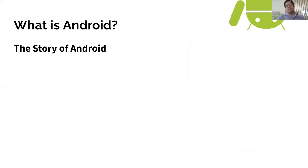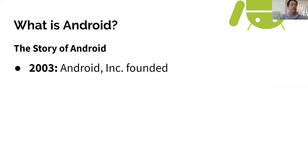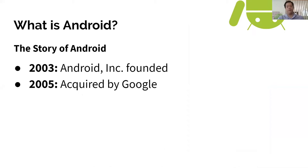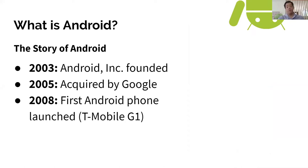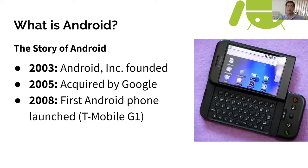Let me give you a brief history of Android. Android was started in 2003 — that's probably longer than most of you have been alive — as a startup company called Android Inc. Two years later, in 2005, Google saw the potential of mobile operating systems and acquired Android for around 50 million dollars. After a few years of development, in 2008, Android launched its first phone with T-Mobile: the G1.